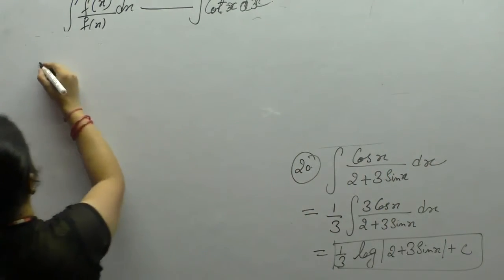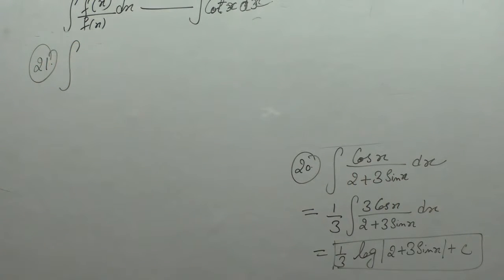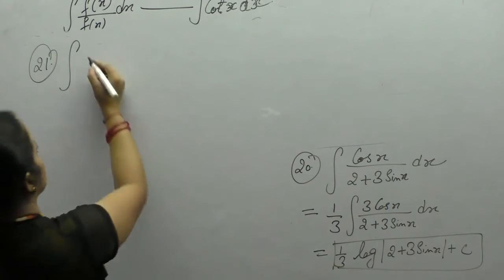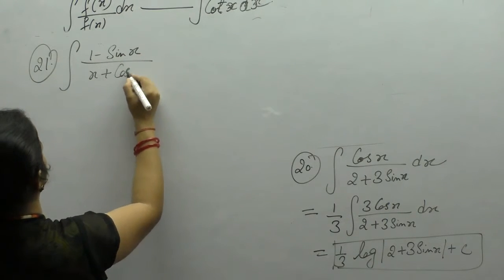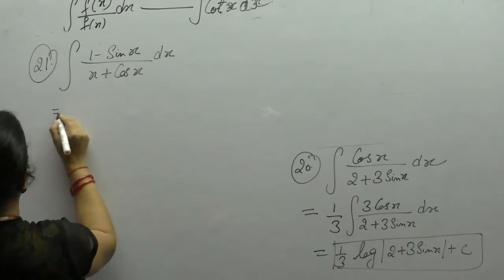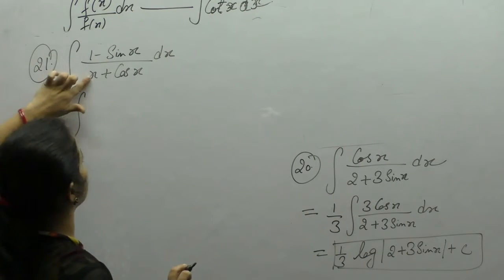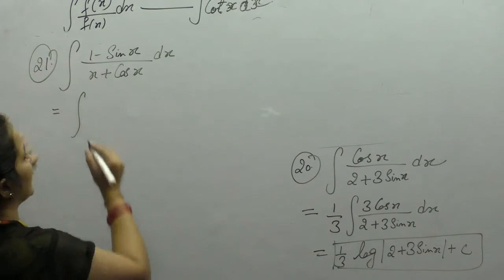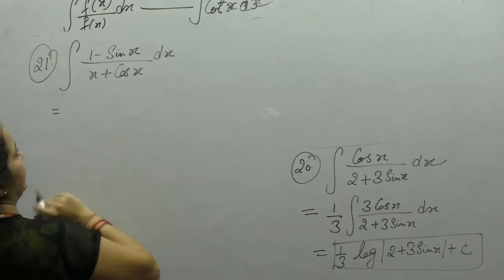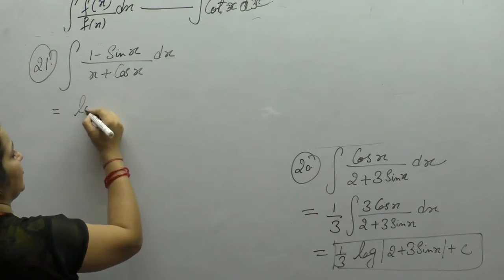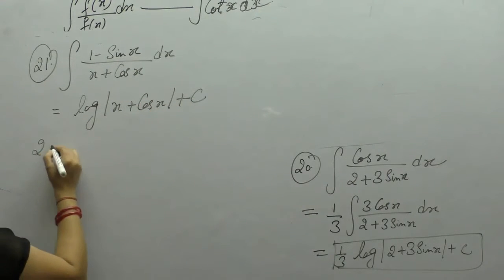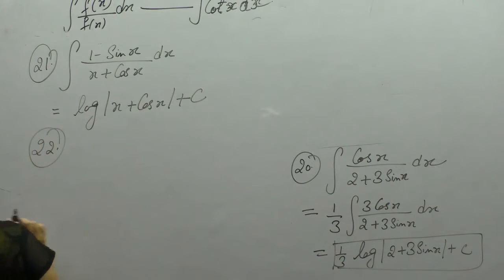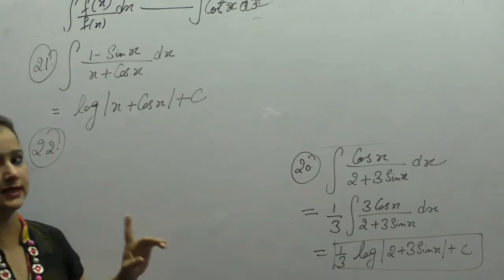Next is integration of (1 − sinx)/(x + cosx). We know directly that derivative of x is 1 and derivative of cosx is −sinx, so the numerator is the derivative of the denominator. We can directly apply the formula: integral of f'(x)/f(x) = log(f(x)). You can try all these sums by putting the denominator as t yourself.